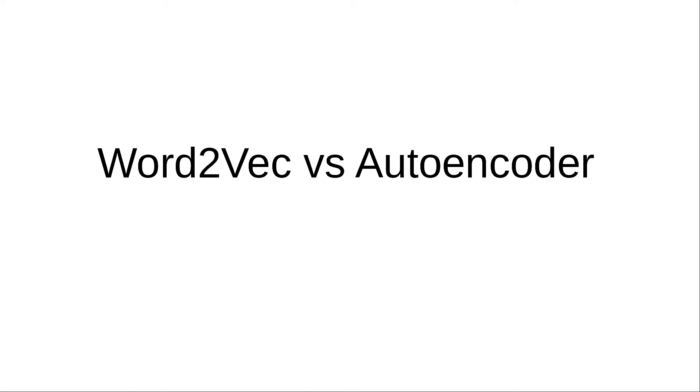What is the difference between word2vec and autoencoder? Because although they are very much different things, some part of their mechanism resemble each other. So sometimes it becomes a little confusing to understand the conceptual difference between them.